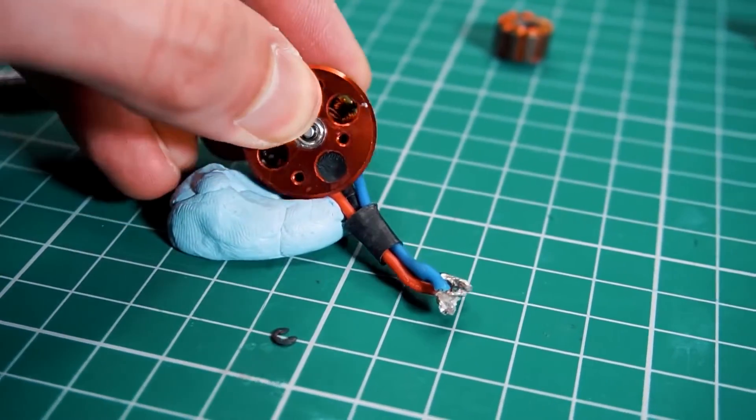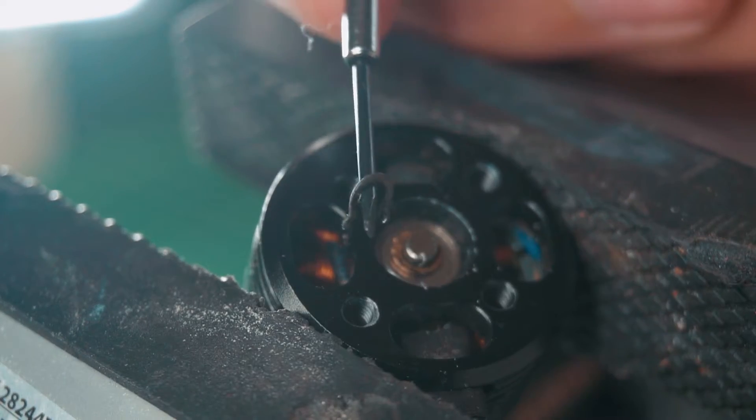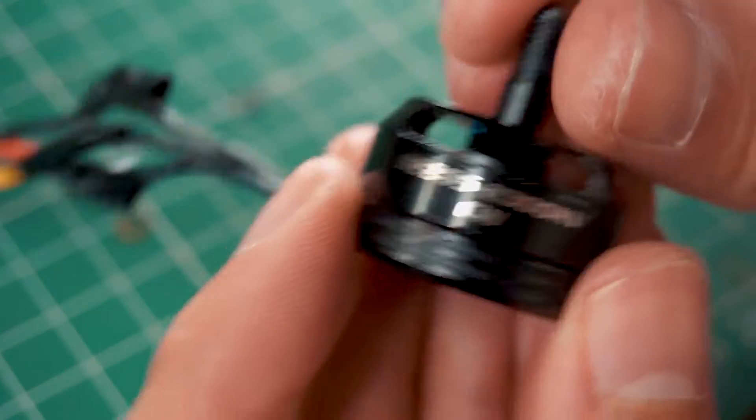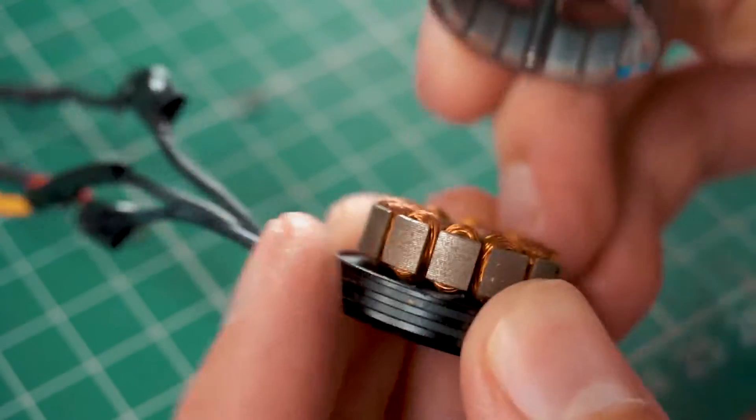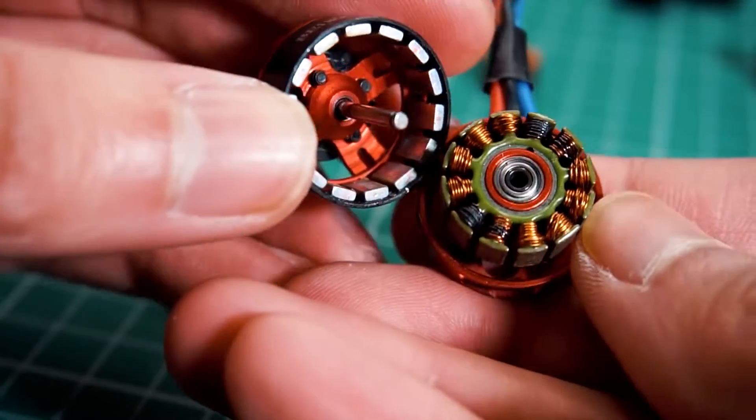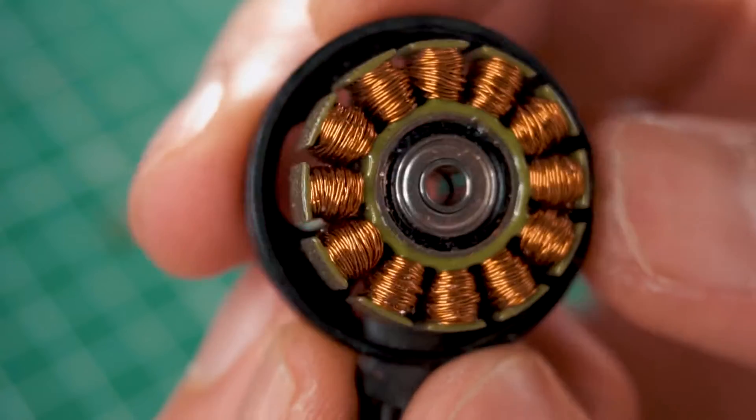After you take the clip off, now you are good to take the other part, which is a kind of washer, and then you are free to remove the bell. The bell is this whole part that holds the propeller, and inside you will find the magnets. We don't have to do anything with it. We have to work on the other half, which is the stator.